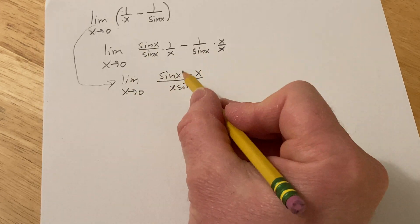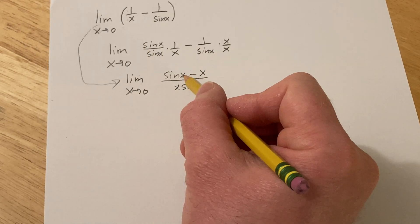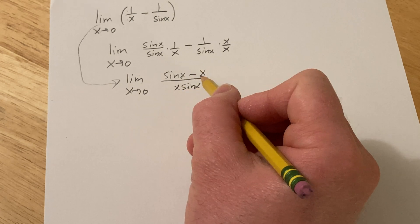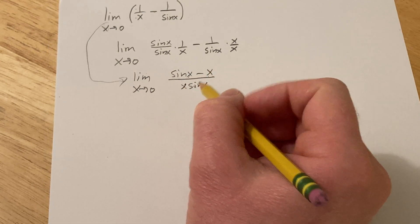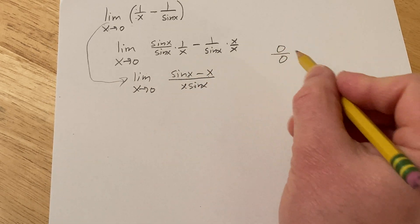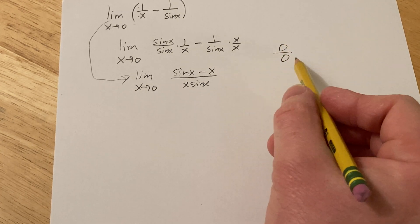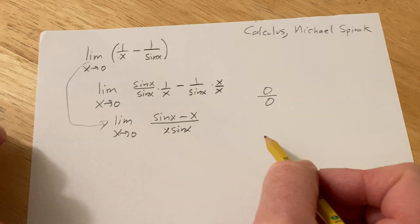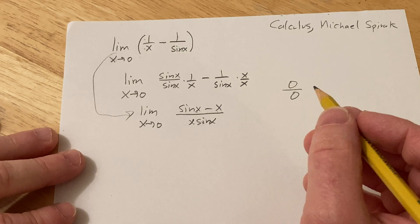Now if you plug in 0, you get 0 over 0 because you get sin of 0, which is 0 minus 0, so you get 0, and you get 0 on the bottom. So whenever you have this indeterminate form, 0 over 0, you can use something called L'Hopital's rule.